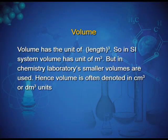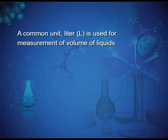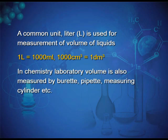Volume has the unit of length cubed. In the SI system, volume has the unit of meter cube, but in chemistry laboratories, smaller volumes are used — hence volume is often expressed in centimeter cube or decimeter cube. A common unit, the liter, is used for measuring volume of liquids: one liter equals 1000 milliliters, and 1000 cm³ equals one dm³. Volume in the chemistry laboratory is also measured by burette, pipette, measuring cylinder, etc.